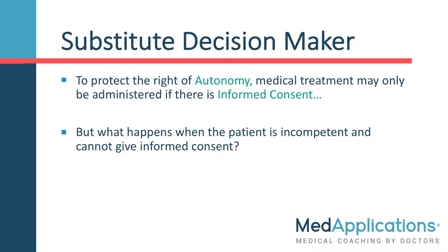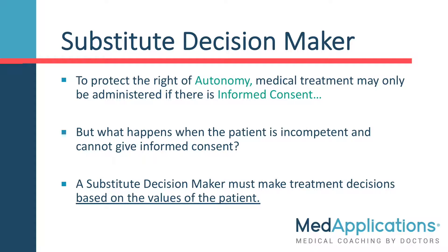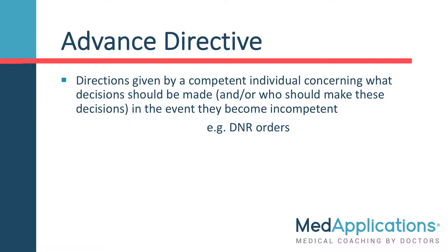So what happens when the patient is incompetent and cannot exercise the right of informed consent? A substitute decision-maker must make treatment decisions based on the values of the patient. These decisions should come as close as possible to the choices the patient would have made if they were competent. Substitute decision-makers are people who know the patient well, such as their spouse, children, or parents. A patient can help communicate their wishes to the substitute decision-maker and healthcare professionals through an advanced directive.